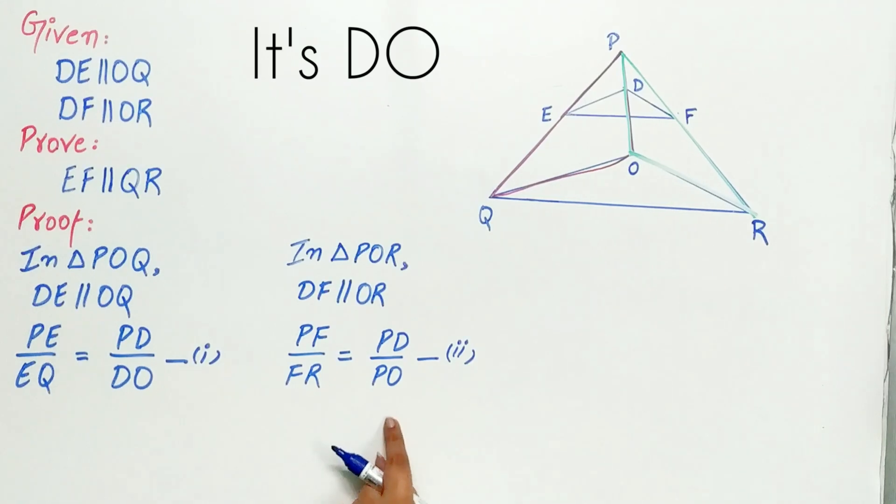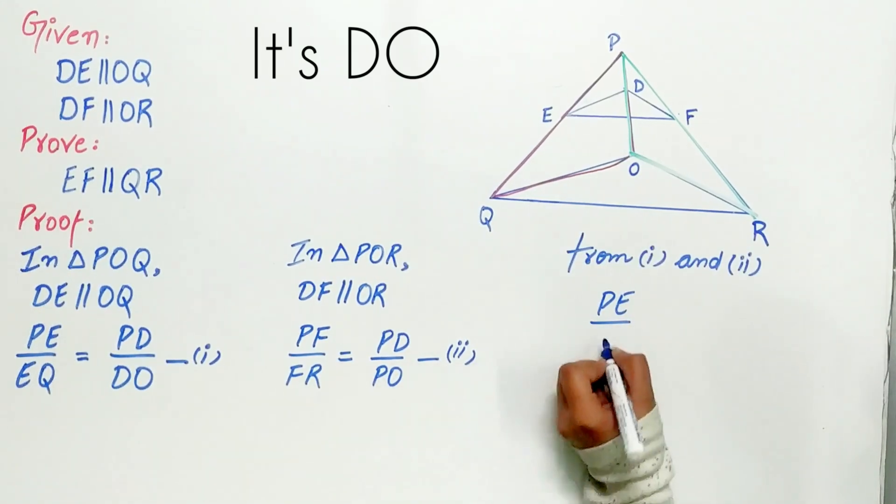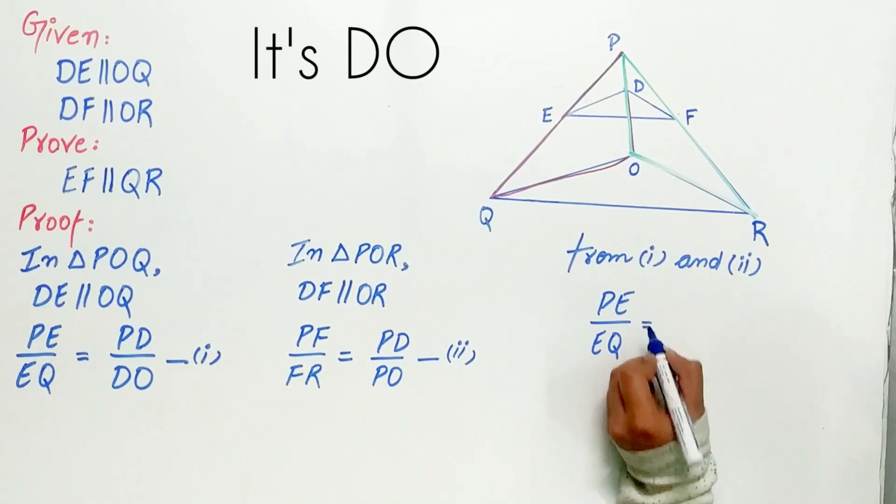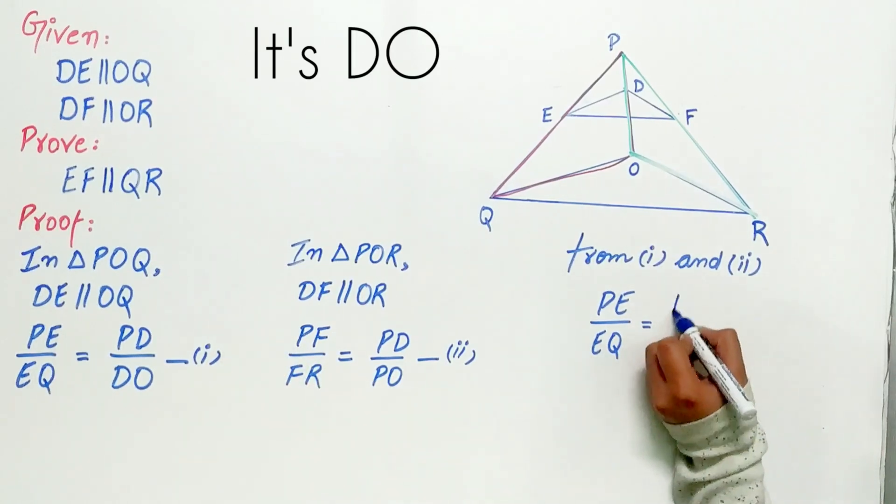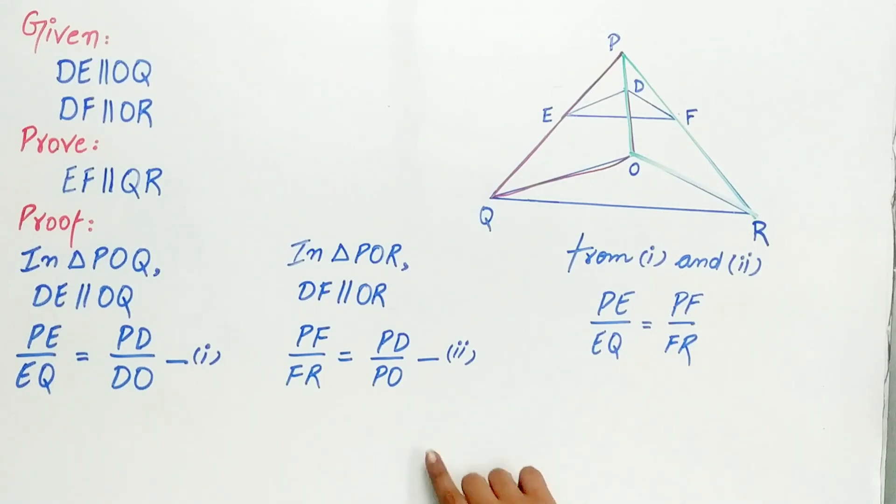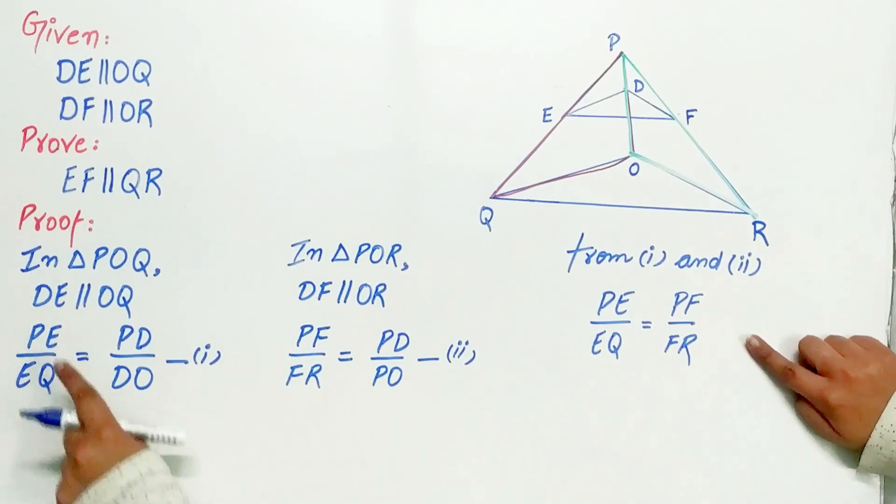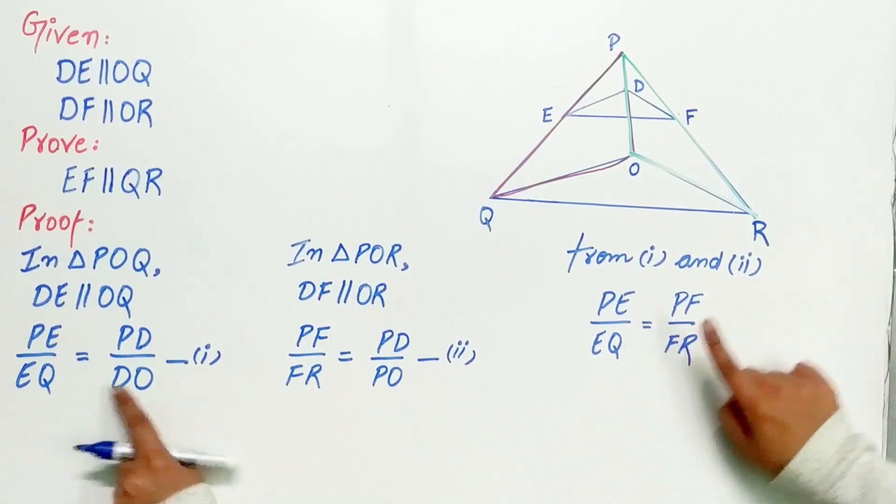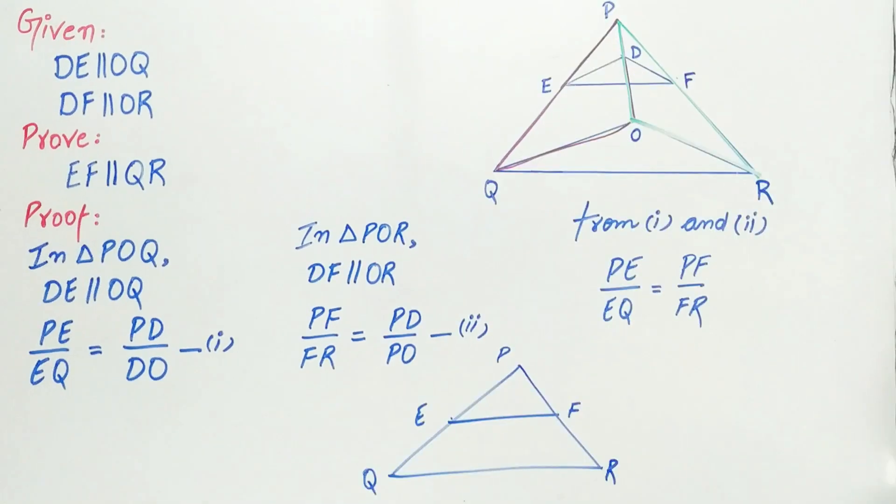Now, from first and second, PE by EQ is equal to PF by FR, because the right-hand side of both equations is the same. Hence, PE by EQ is equal to PF by FR.